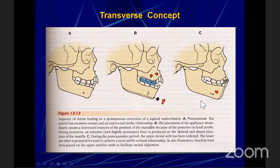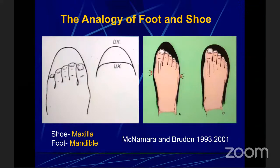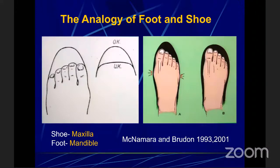During the post-expansion period, the upper dental arch has been widened and the lower jaw is postured forward to achieve a more stable occlusal relationship. I always use this shoe-and-foot example in my lectures: the shoe is like the maxilla and your foot is like the mandible. When you have a tight shoe and you buy one size bigger, your foot glides forward. When you expand the upper jaw, the mandible slightly moves forward, and you will see partial correction of the Class 2 — even without any functional appliance activation.